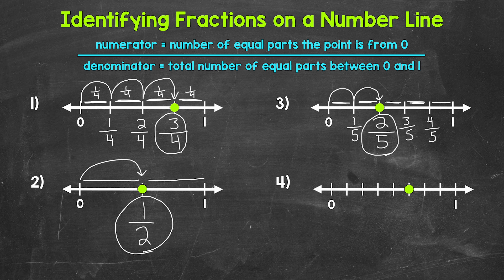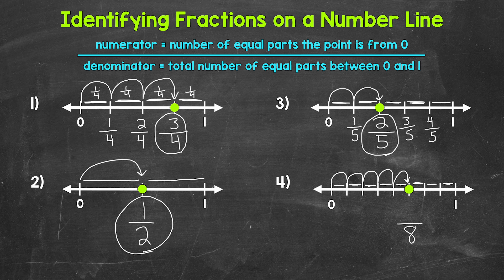Lastly, let's take a look at number four, and we'll start with the denominator. How many total equal parts has the distance between zero and one been divided into? One, two, three, four, five, six, seven, eight. So eight is our denominator — we have eighths here, and each part is one eighth of the whole. Now for the numerator: how many equal parts is the point away from zero? One, two, three, four, five. So five is our numerator. This number line represents five eighths.